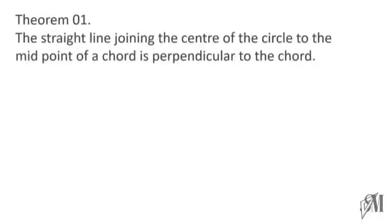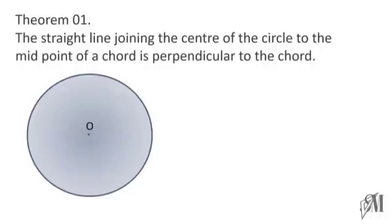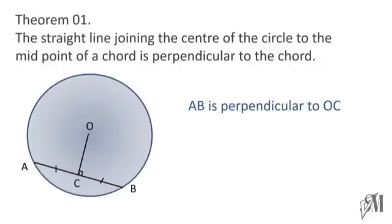The first theorem states that the straight line joining the center of the circle to the midpoint of a chord is perpendicular to the chord. Here is a circle where O is the center and let AB be a chord, where C is the midpoint of the chord AB. If I join OC, remember OC is perpendicular to AB according to the theorem, so we can say AB is perpendicular to OC.